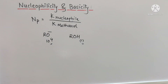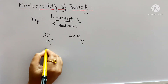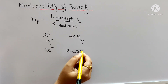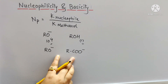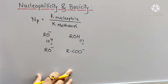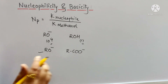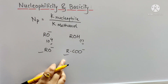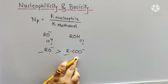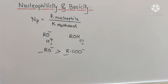If two nucleophiles have the same nucleophilic atom — for example, oxygen — then nucleophilicity increases with increase in basicity. The strong base has greater nucleophilicity than the weak base, so the nucleophilicity of RO⁻ is greater than that of ROH. This holds good when comparing atoms in the same row of the periodic table. For example, OH⁻ ions are more basic and more nucleophilic than H₂O.